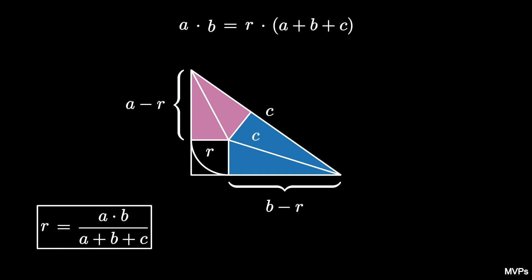But these two legs side by side create the hypotenuse of the triangle so that C is equal to A minus R plus B minus R.